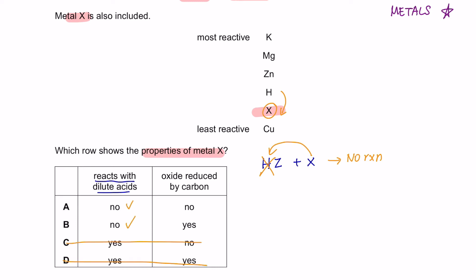Next we're going to see if metal X oxide can be reduced by carbon. So X oxide reacting with carbon. Carbon atom can be found in between potassium and magnesium. So carbon atom is more reactive than element X, meaning that it can displace element X. So therefore there will be a reaction. The answer is B.